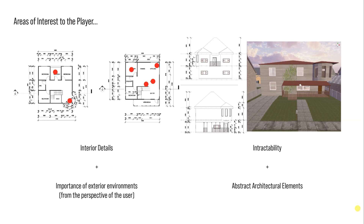The spring house had the most interactability and also featured the abstract architectural element of a round room at the front. It also had a lot of interior details including its own library. Particle effects were implemented to give off the sense of pollen in the air to replicate the spring feel.